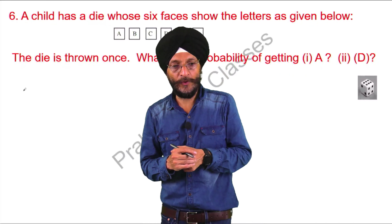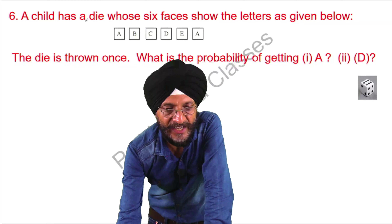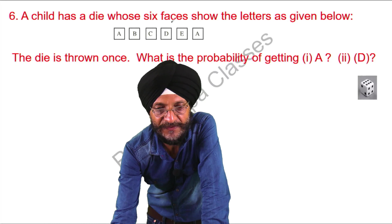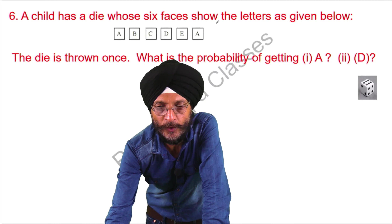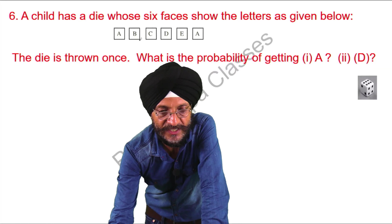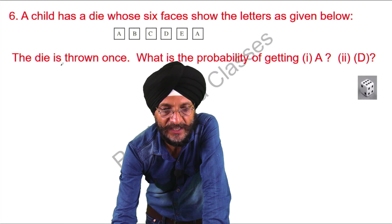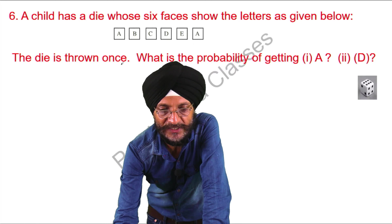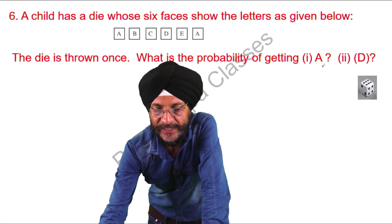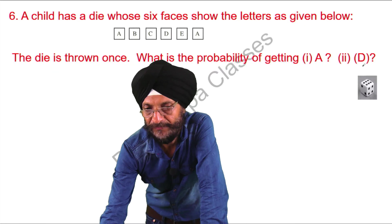The question before us is: a child has a die whose six faces show the letters as given below. The die is thrown once. What is the probability of getting A and D?